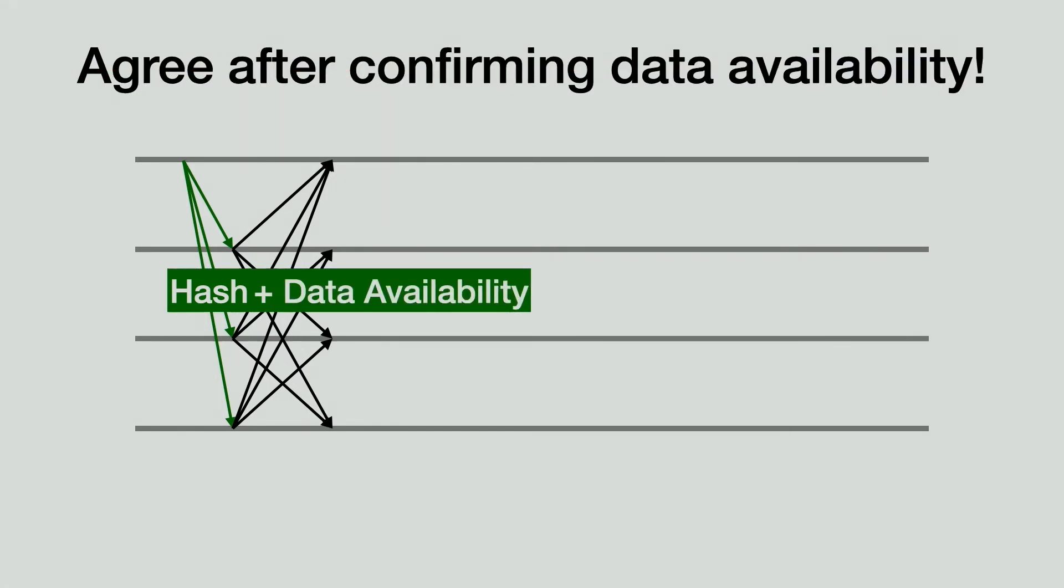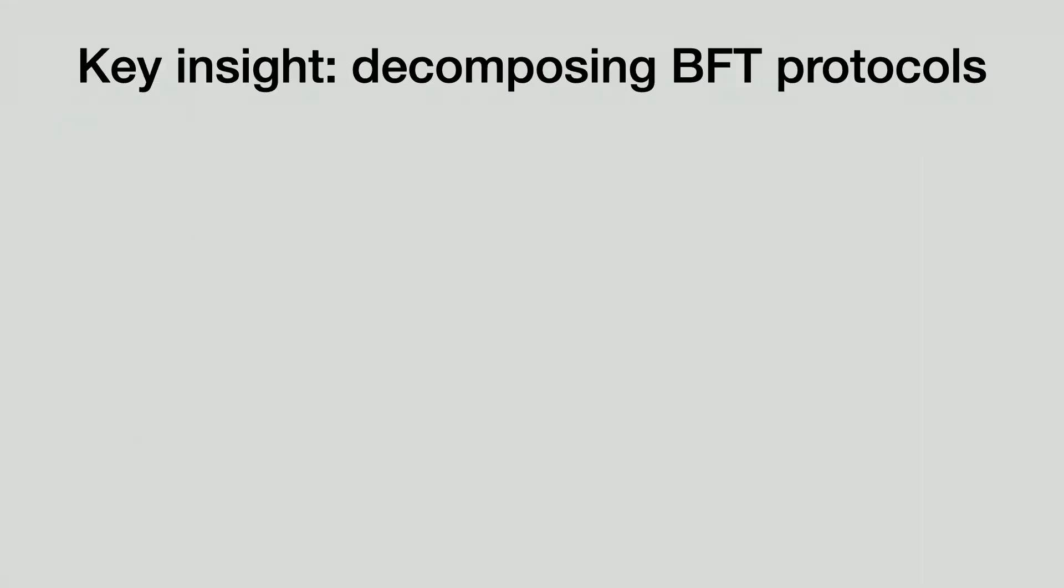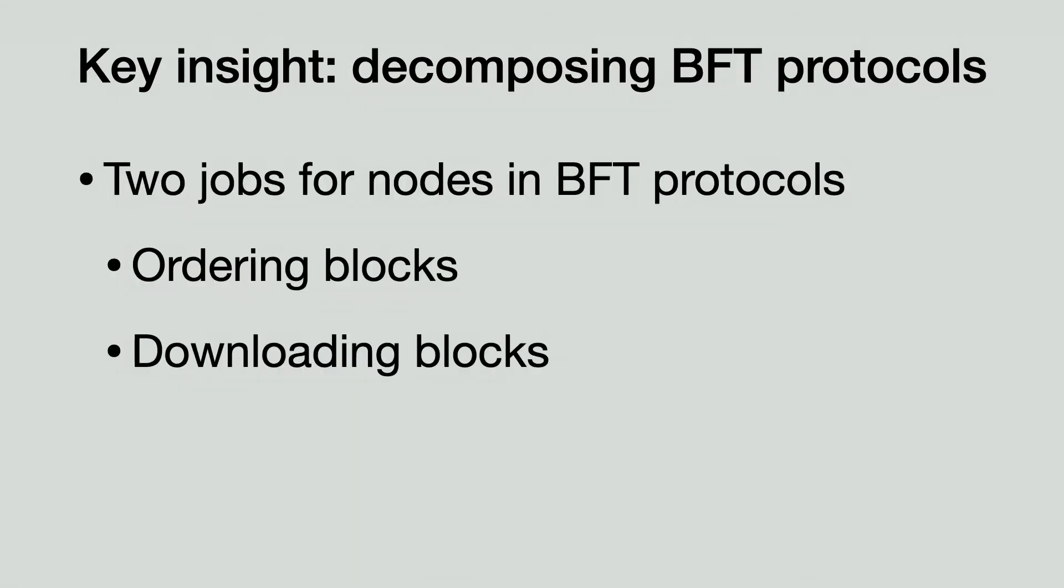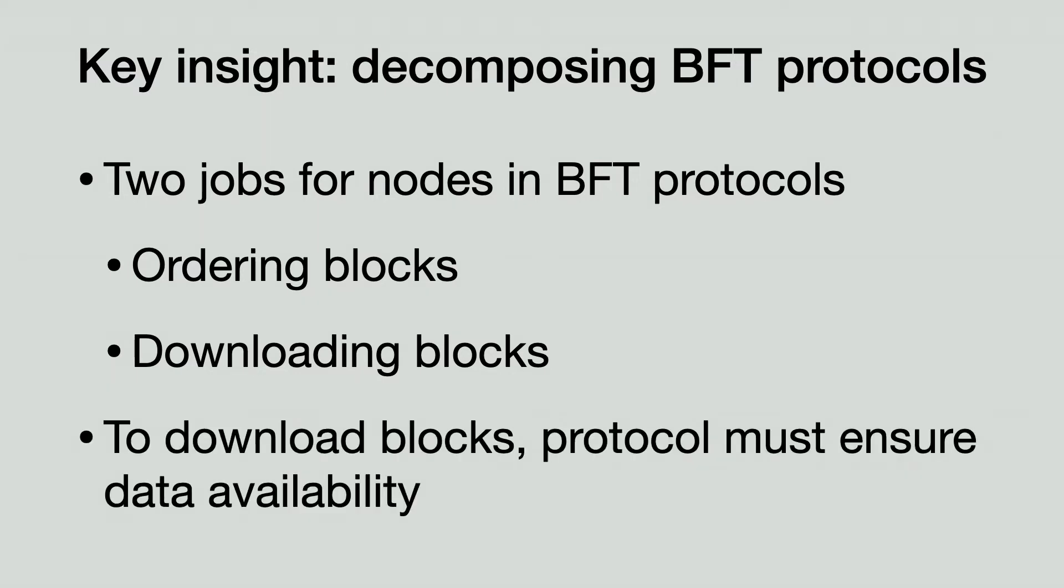Instead, we observe that nodes must confirm that the block corresponding to the hash is available for download. We call this property the data availability of the block. This ensures that nodes can always obtain the block that they have agreed to append. This leads to our key insight. Nodes in a BFT consensus protocol perform two jobs: agreeing on the ordering of blocks and downloading the blocks. In particular, the block download is not required for consensus, and each node can download at their own pace. However, to ensure the blocks are available for download, nodes must confirm the data availability of the proposed blocks.